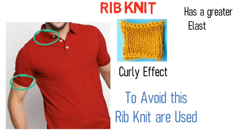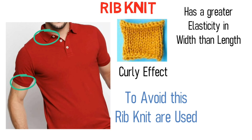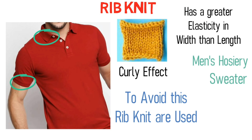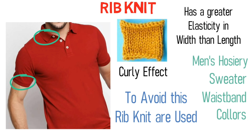Rib knit has greater elasticity in width than in length. It is used in men's hosiery, sweaters, waistbands, collars, and similar applications.